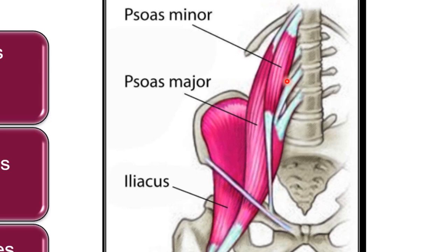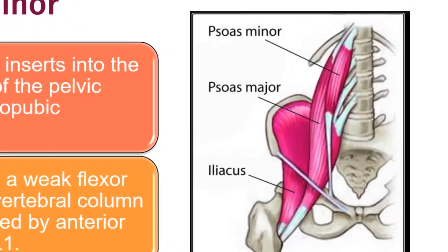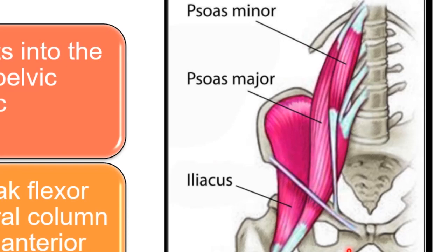Psoas minor is not as broad and large as psoas major — it's very slender and has long tendinous components. Its origin is from T12 and L1 and also the intervertebral disc between these vertebrae. It runs with its long tendon to insert at the pectineal line of the pelvic brim and also at the iliopubic eminence, which is the point between the ilium and the pubis.